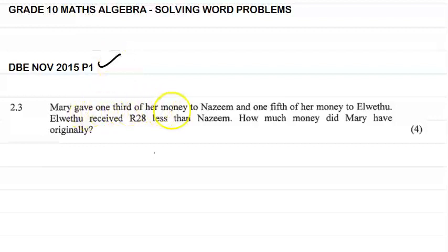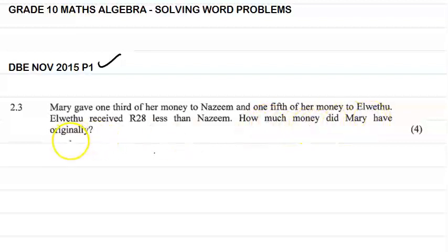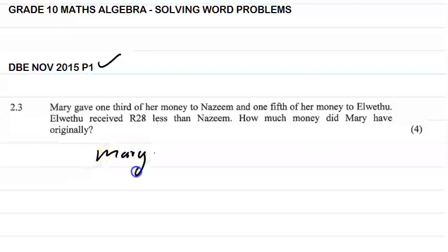Mary gave one third of her money to Nazim and one fifth of her money to Alberto. Alberto received 28 rand less than Nazim. How much money did Mary have originally? We start this question by letting the amount that Mary had equal to x. We're going to formulate an equation with Alberto and with Nazim.